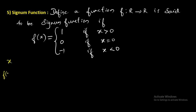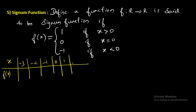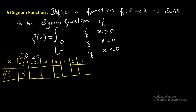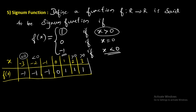For the graph of the signum function, let me make a table with x values and f of x values: minus 3, minus 2, minus 1, 0, 1, 2, 3. Minus 3 is less than 0, so f of minus 3 is minus 1. Minus 2 is also less than 0, so f of x is minus 1. For 0, f of x is 0. For 1, f of x is 1. For 2 and 3 — greater than 0 — f of x is 1. For any x less than 0, f of x is minus 1.